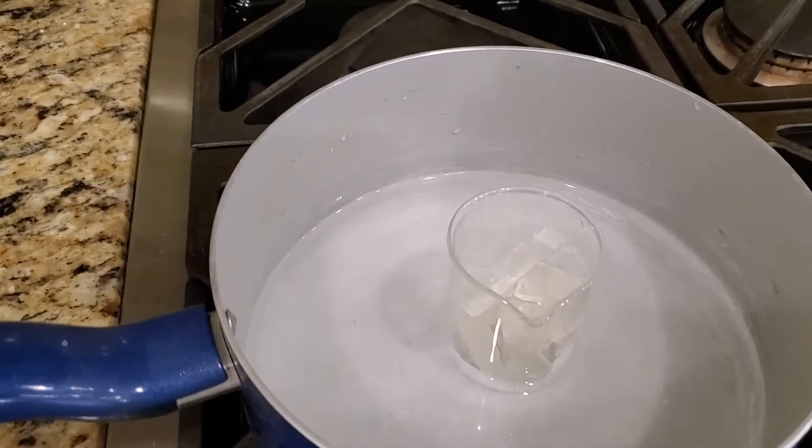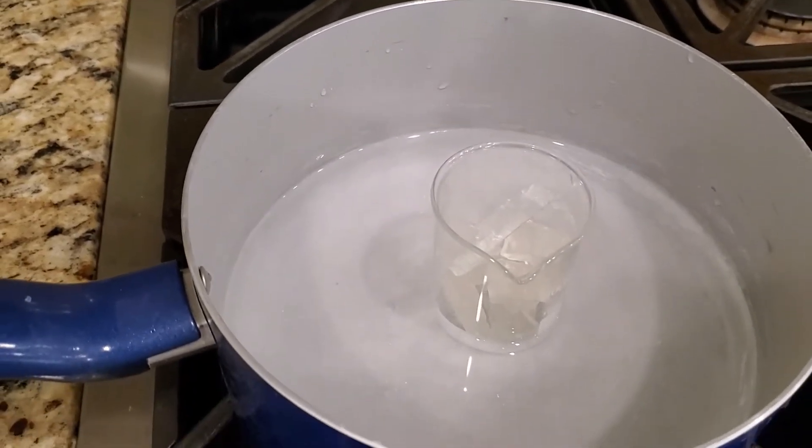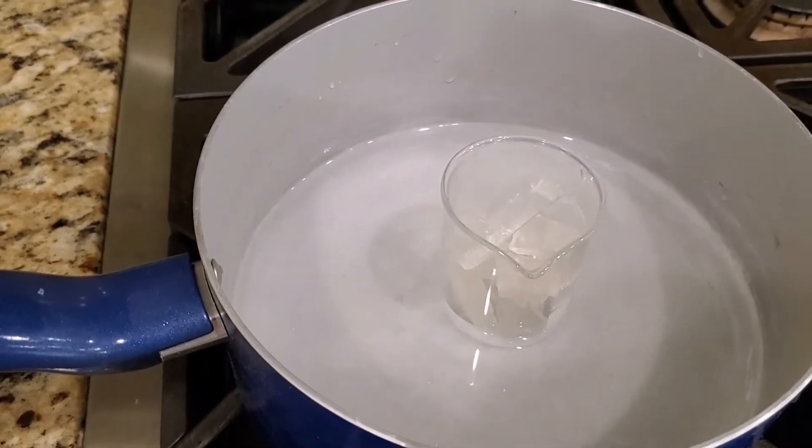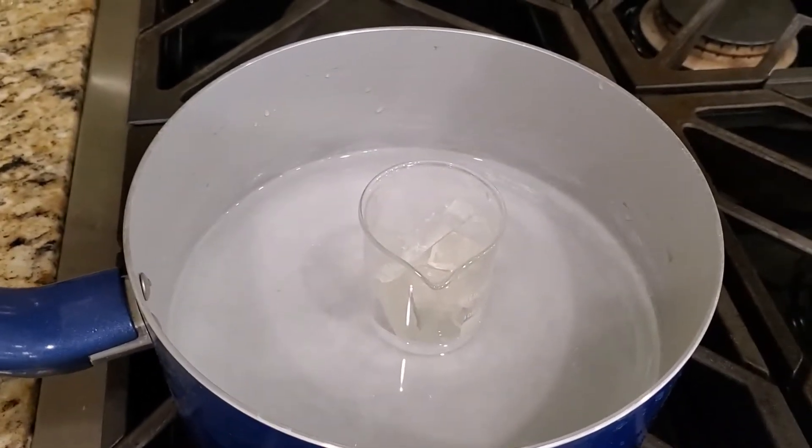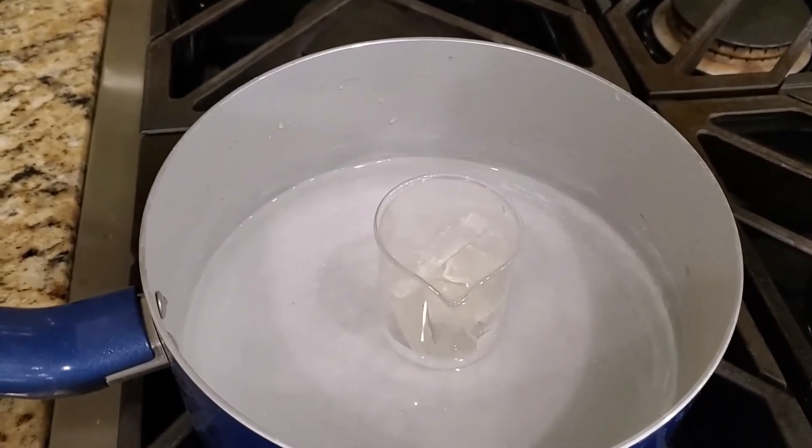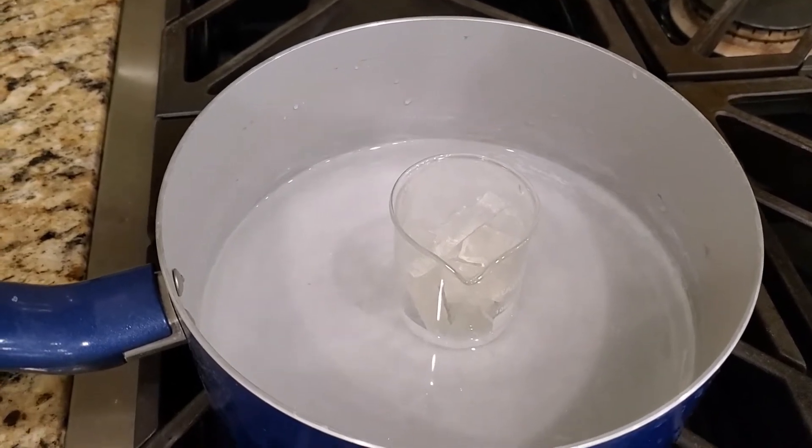Here is the soap on the double boiler and I am just going to let it melt. I have it on the lowest setting just so that it doesn't boil because you don't want your soap to boil.